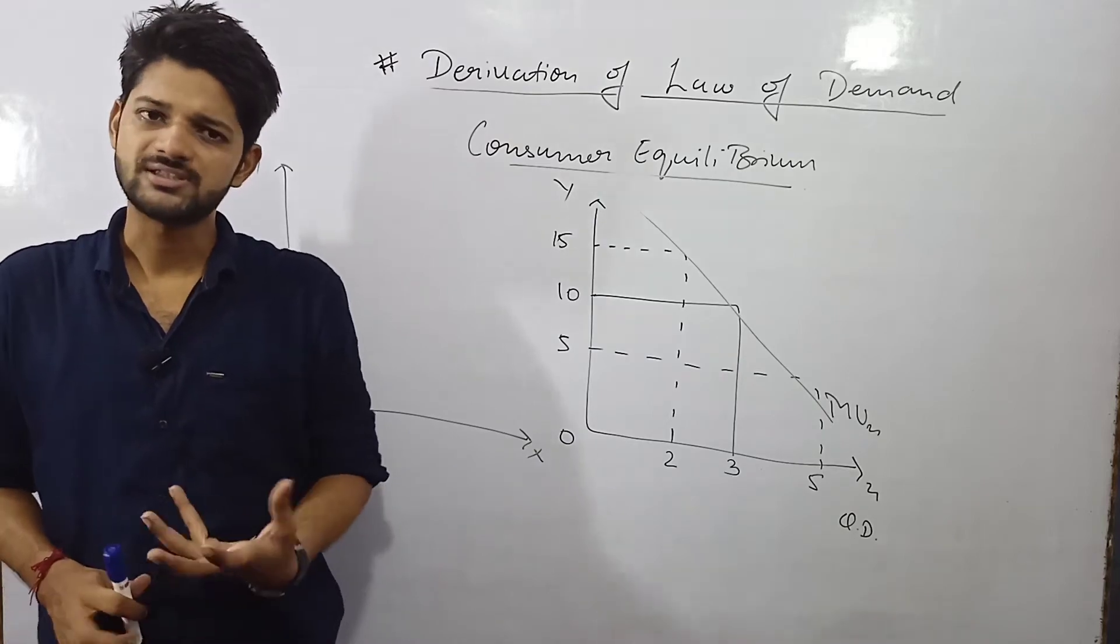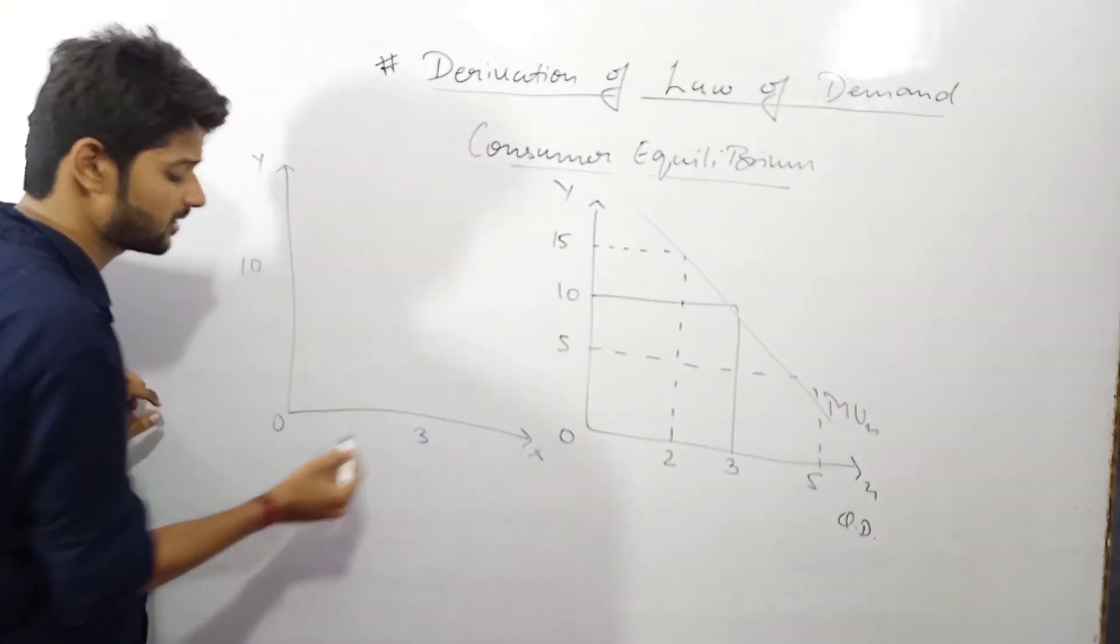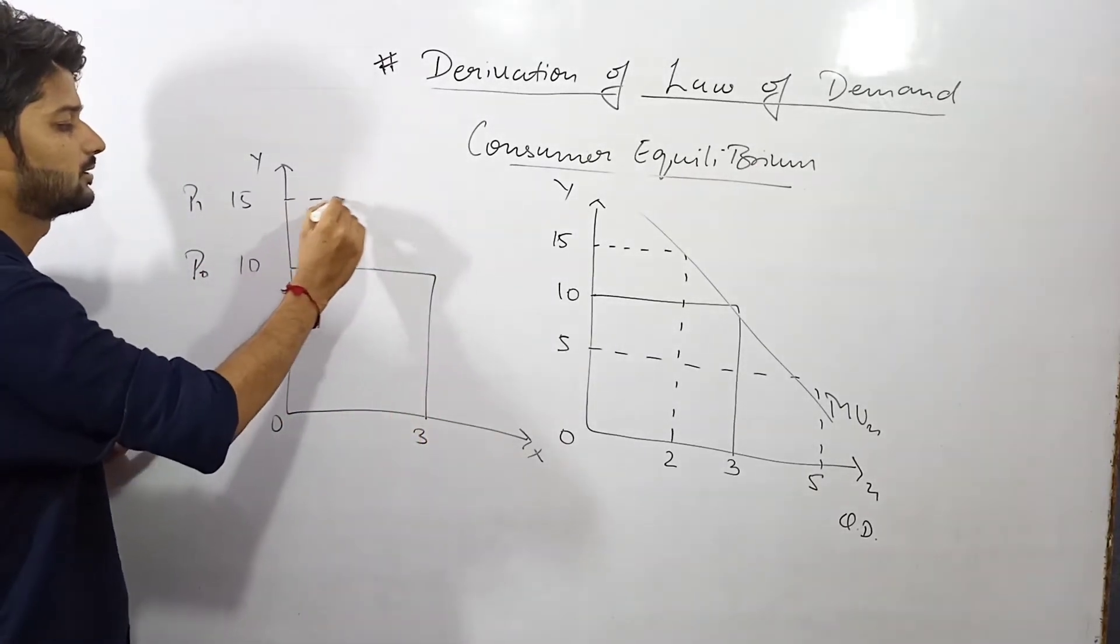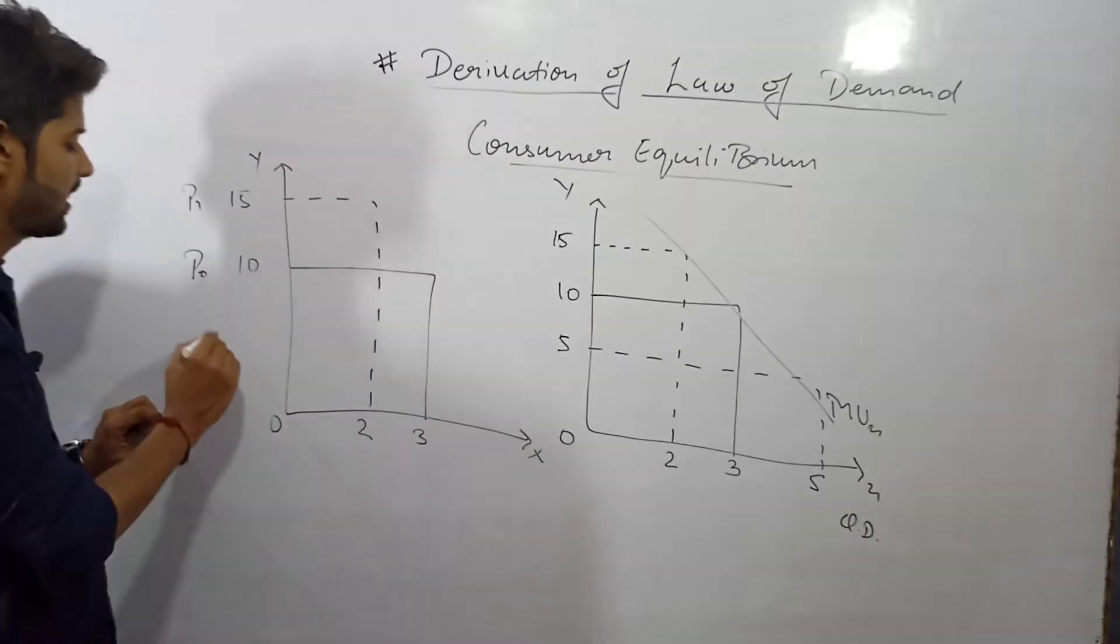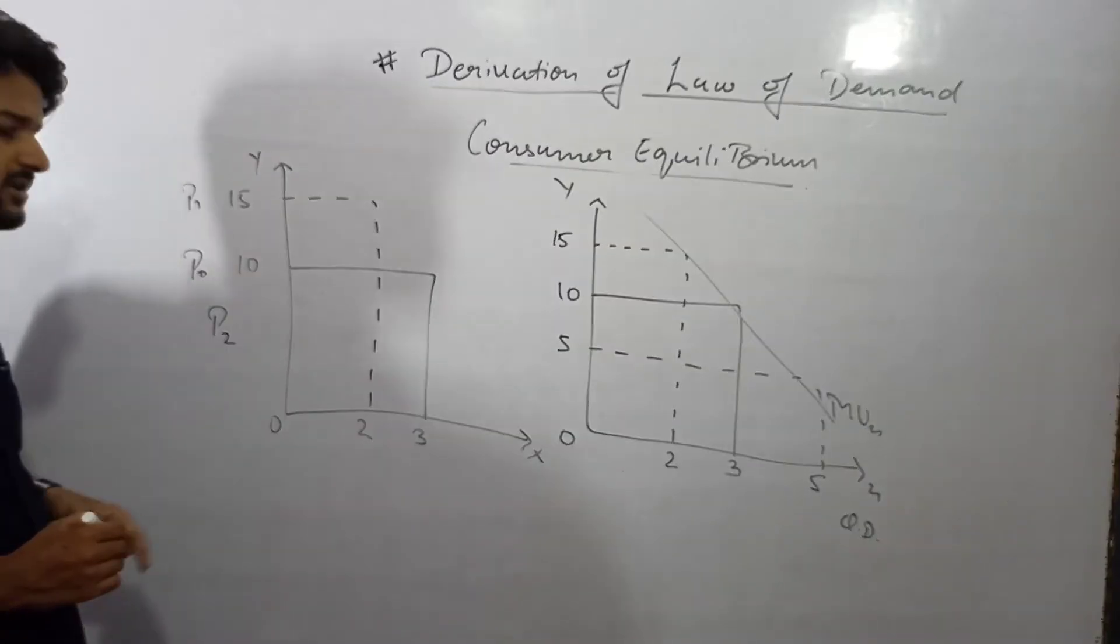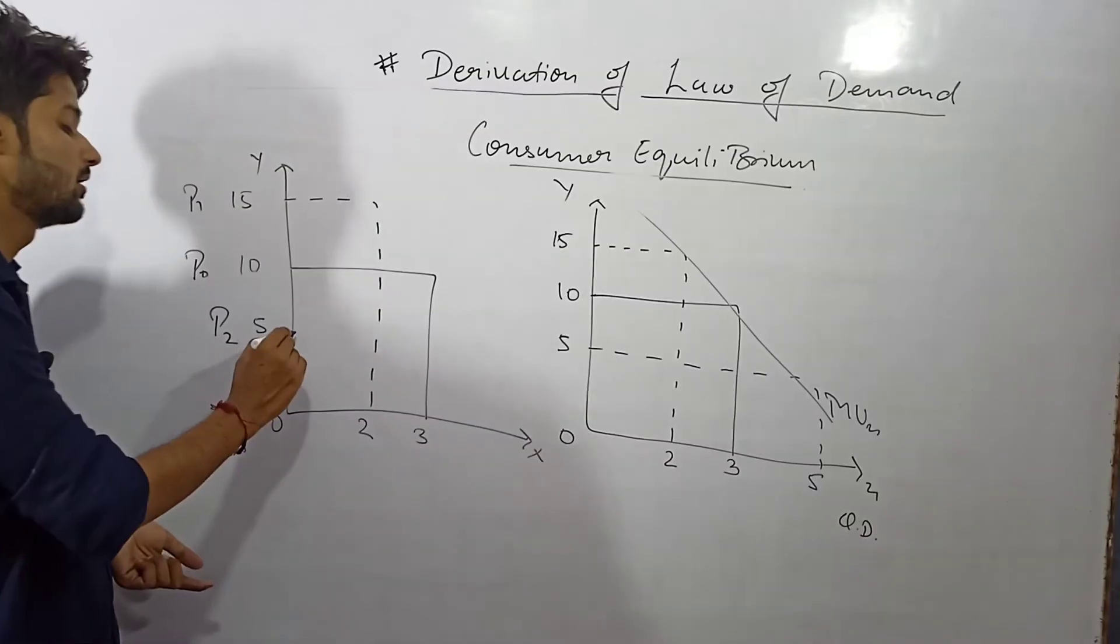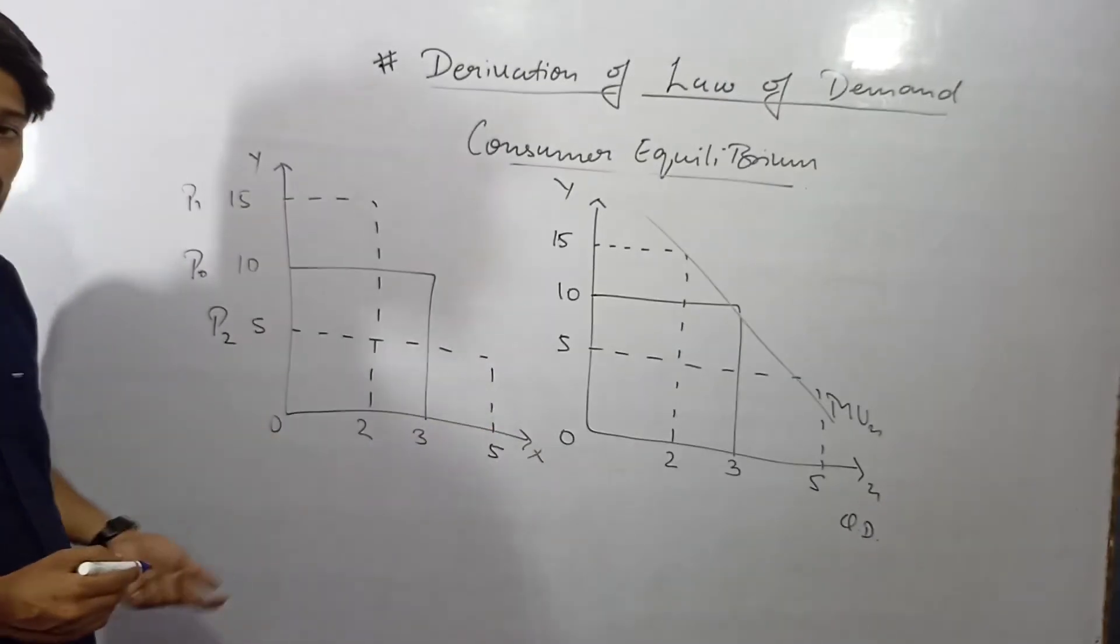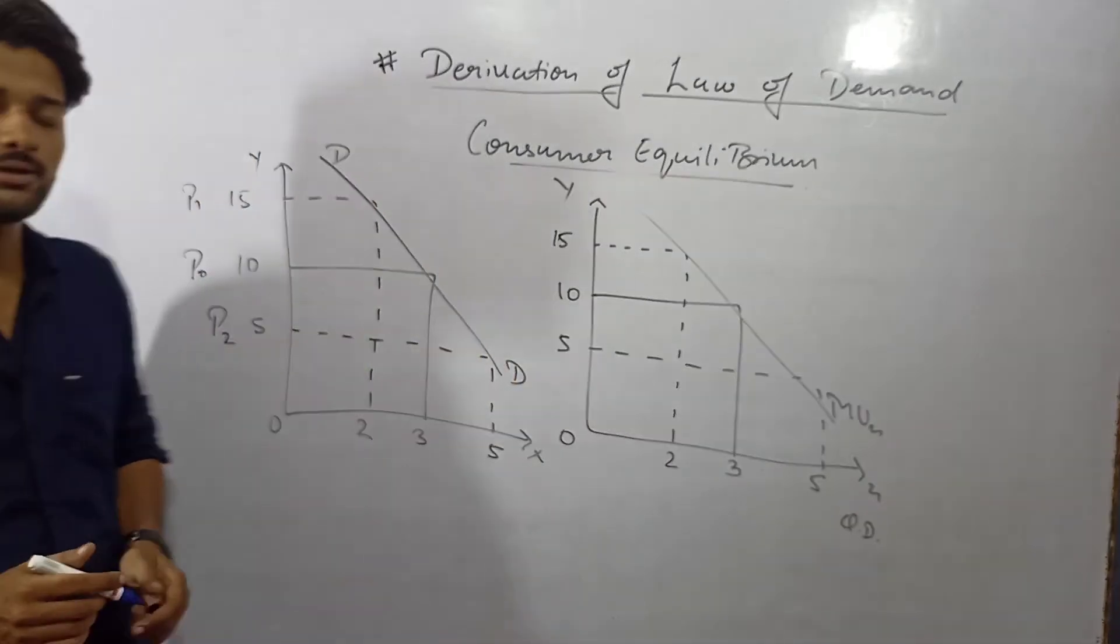Now if I am going to link this diagram to the law of demand, what will be that? At 10 rupees price a consumer consumes 3 units. Now as the price increases from P0 to P1, that is from 10 to 15, then with the increase in price the consumer is having the less unit of X that is 2. And now as the price has been decreased from P0 to P2, decreased to P2, so as the price has been decreased there is a tendency of consuming more for the consumer.